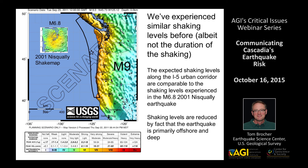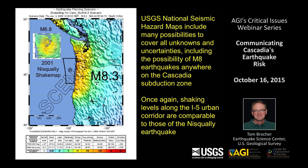The duration of shaking will be longer and a much larger area will be impacted, but the levels of shaking are something we've seen before. This is a somewhat surprising result — shaking levels are reduced by the fact that the earthquake is primarily offshore and at some depth. For a smaller earthquake — say a patch producing a magnitude 8.3 — shaking levels along the I-5 urban corridor are still about the same as we saw in the Nisqually earthquake.